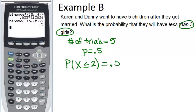We get our answer is 0.5. So the probability that they will have less than 3 girls is 50% chance.